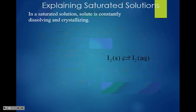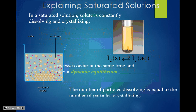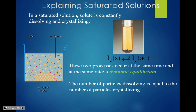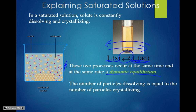In a saturated solution, solute is constantly dissolving and recrystallizing — that's where the double arrow in the equation comes from. For example, I2(s) ⇌ I2(aq): the forward reaction creates aqueous I2 and the reverse creates solid I2. These two processes occur at the same time and are called dynamic equilibrium. The number of particles dissolving equals the number of particles crystallizing.